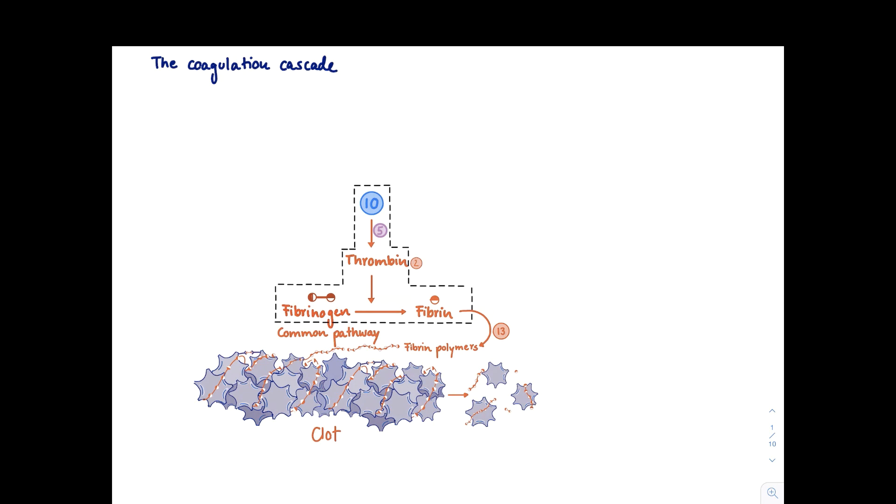So we already know what happens during primary hemostasis. I have described this in another video. And now we have to really figure out what happens when we initiate the coagulation cascade. What is the net result of the coagulation cascade?